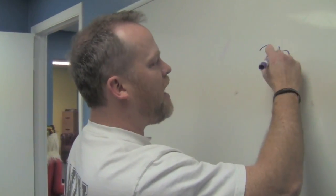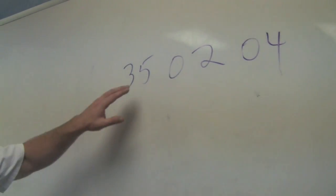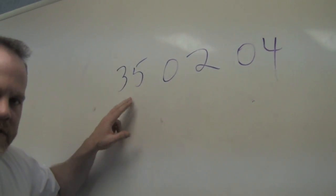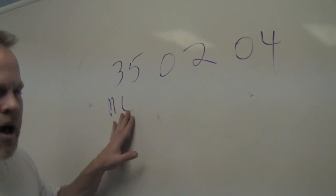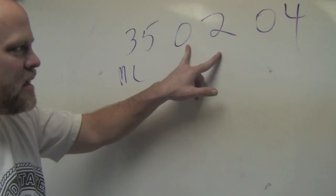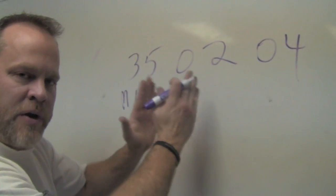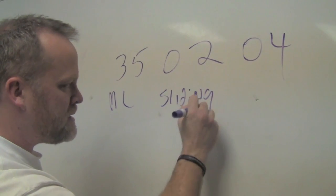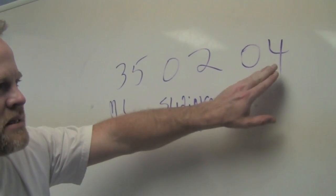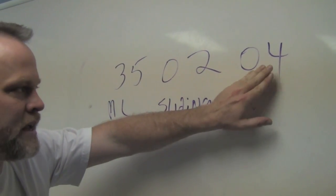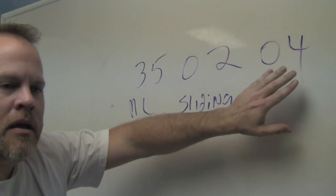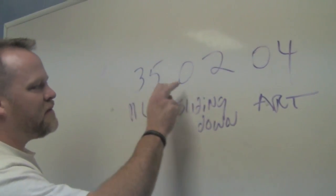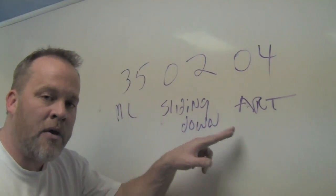Zero-four is Sarah creating art. So let's take the number 3-5-0-2-0-4. That number is Muhammad Ali, Santa Claus, and Sarah. Since Muhammad Ali — the 35 — is first in the sequence, we take Muhammad Ali. The next one is Santa Claus; since it's second in the series, we don't take the person, we take the verb. What was the verb with Santa Claus? Sliding down. And then the last one, Sarah — since it's last in the sequence, we don't take the person or the verb, we take the noun. The noun for Sarah was art. So when you have 3-5-0-2-0-4, you have Muhammad Ali sliding down on art.